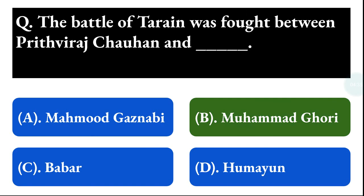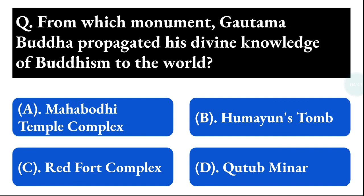Next question: from which monument did Gautam Buddha propagate his divine knowledge of Buddhism to the world? Option A: Mahabodhi Temple Complex, option B: Humayun's Tomb, option C: Red Fort Complex, option D: Minar. The correct answer is option A, that is Mahabodhi Temple Complex.